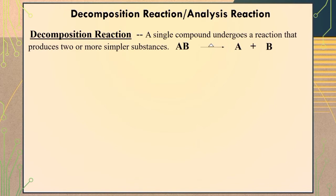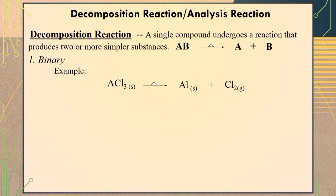There are several types of decomposition reaction, like the binary type. Binary compounds are compounds containing two different elements. For example, when heat energy is applied to solid aluminum chloride, it will dissociate into aluminum plus chlorine. By inspection, we can see that chlorine has three atoms on the reactant side, while we only have two atoms of chlorine on the product side.